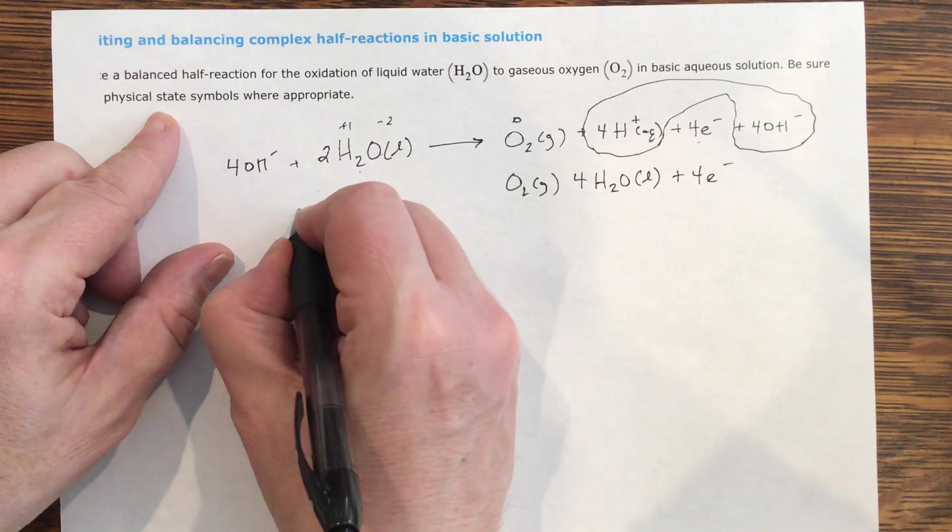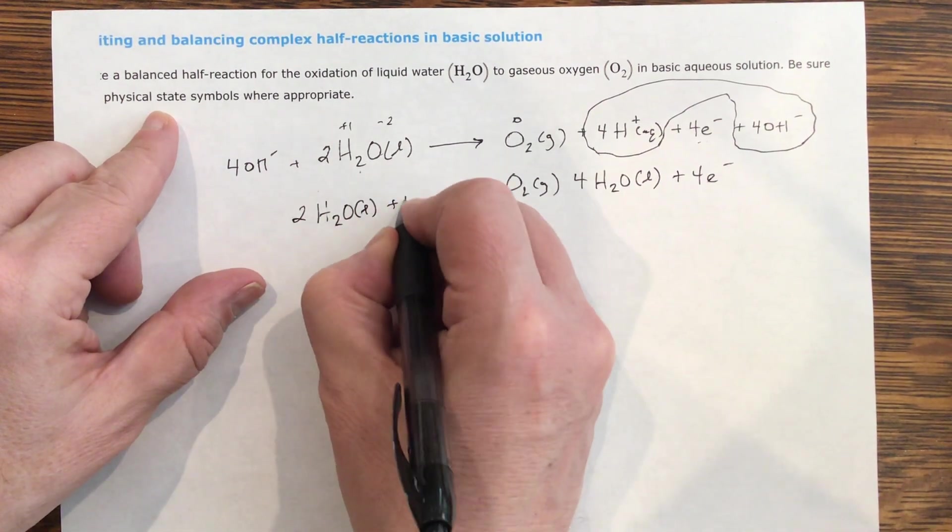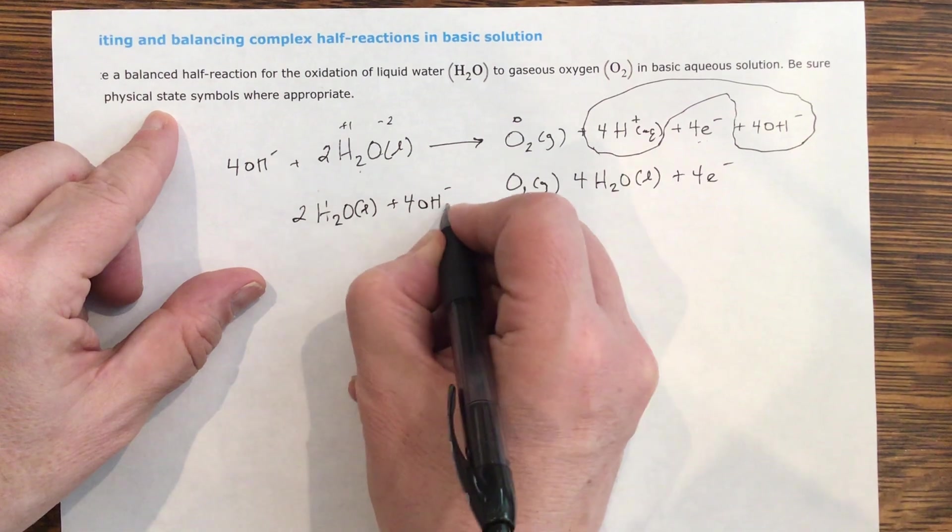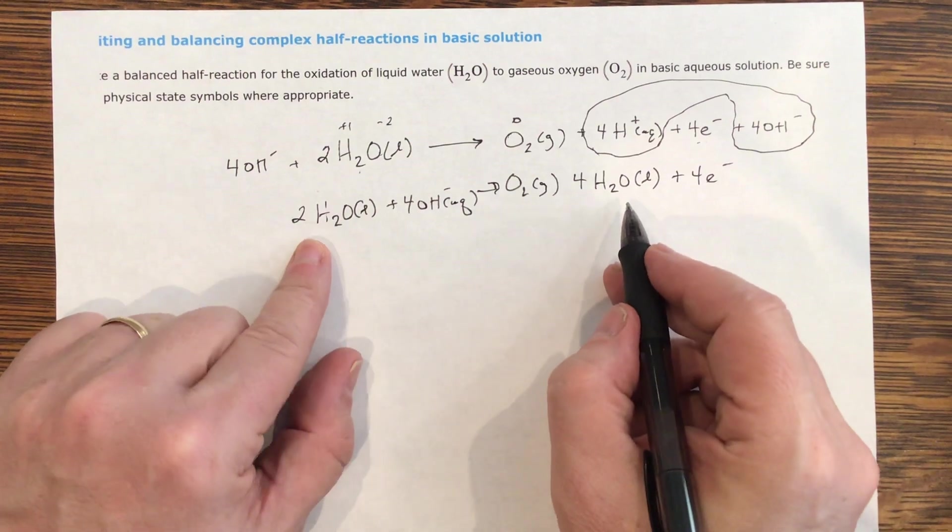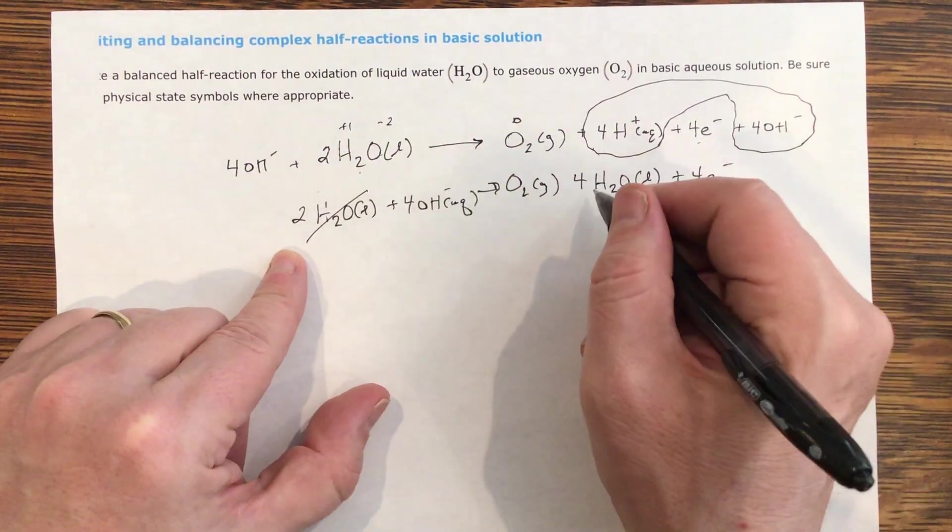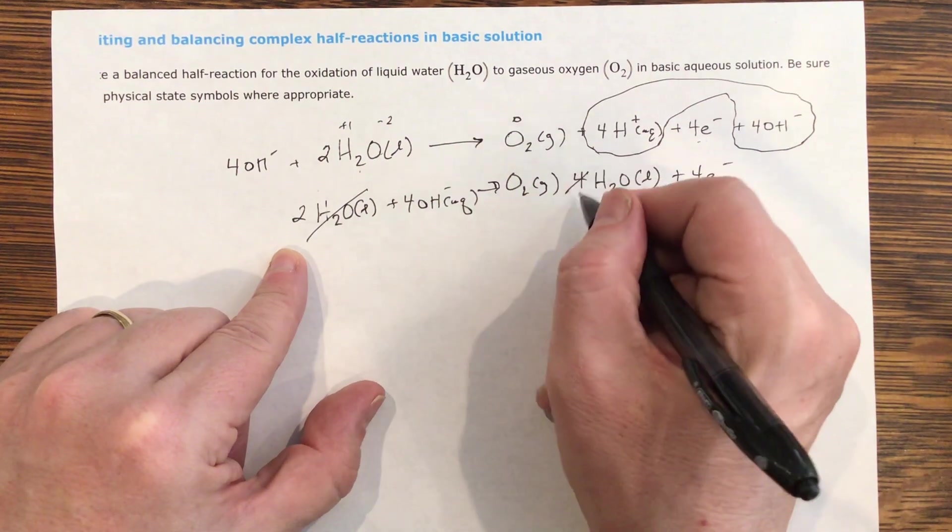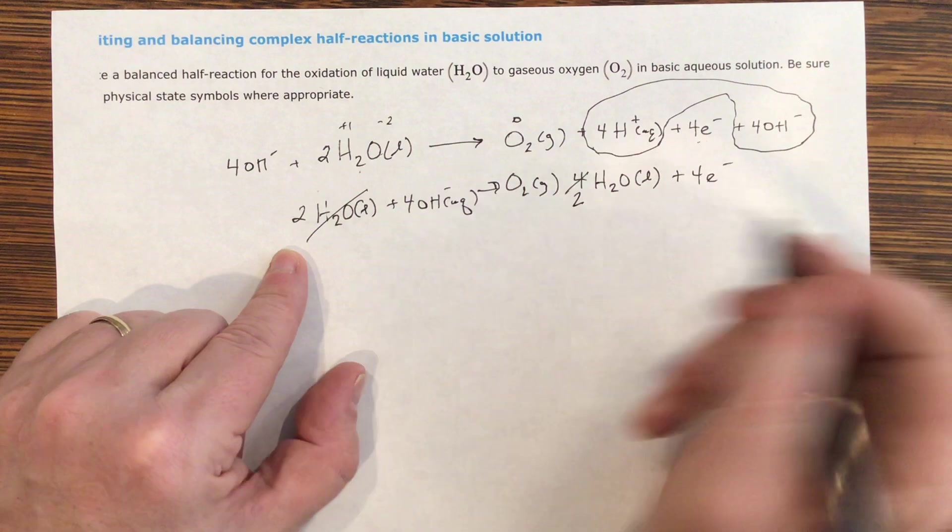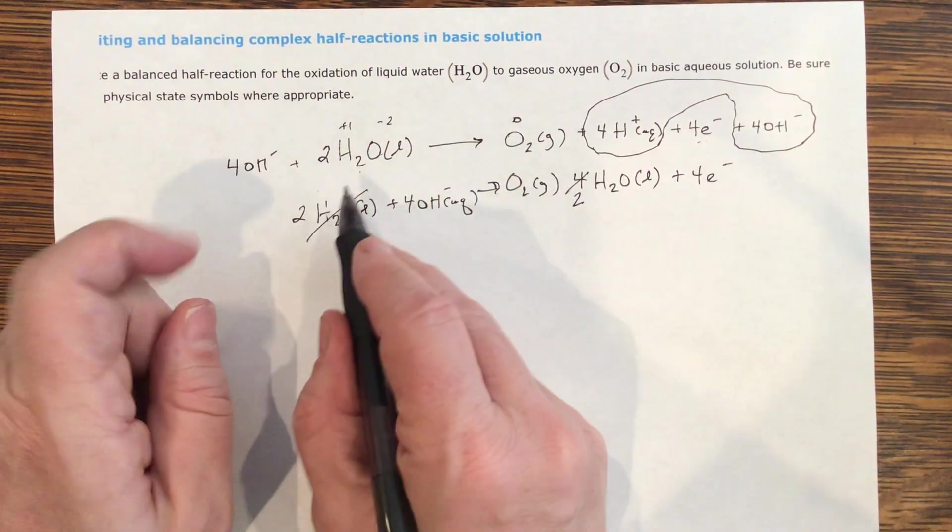On this side, I've got two waters, which is a liquid, plus four hydroxides, which is aqueous. Now I've got waters on both sides. So two waters cancels with two waters, leaving you two. Two will cancel with two, and so on this side now, I have two waters, and I have none on this side.